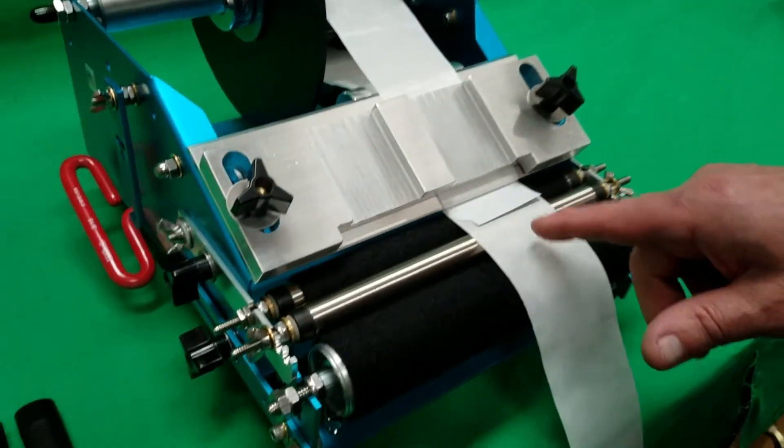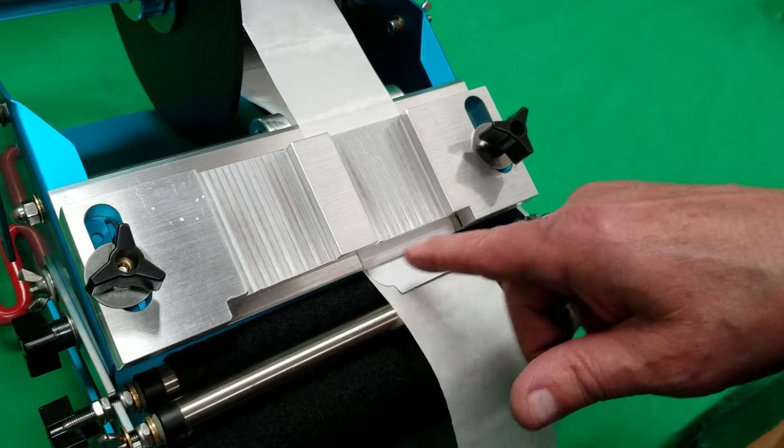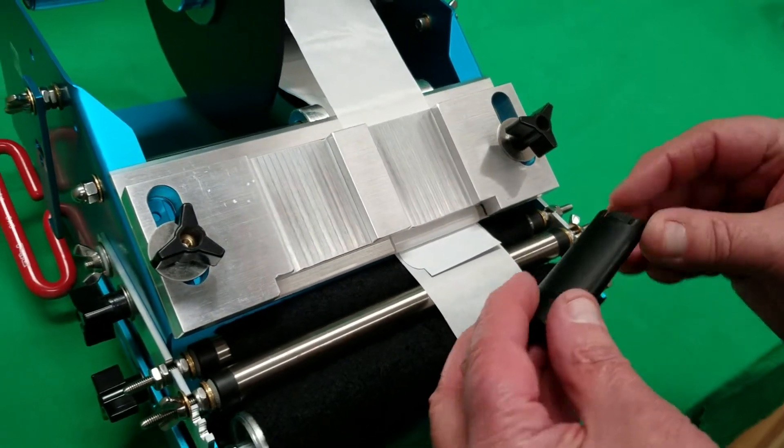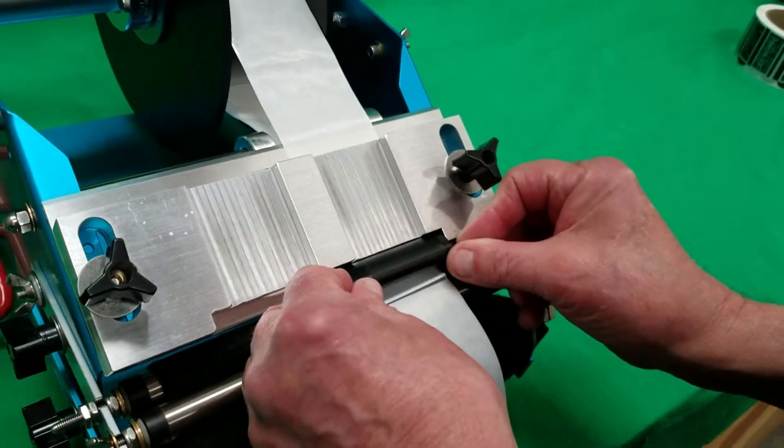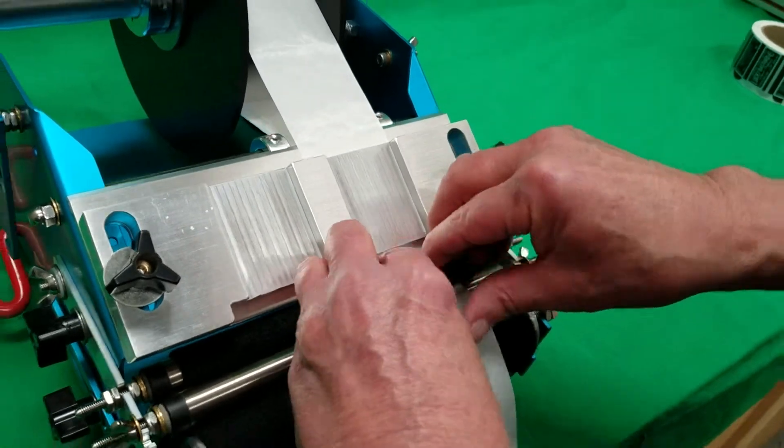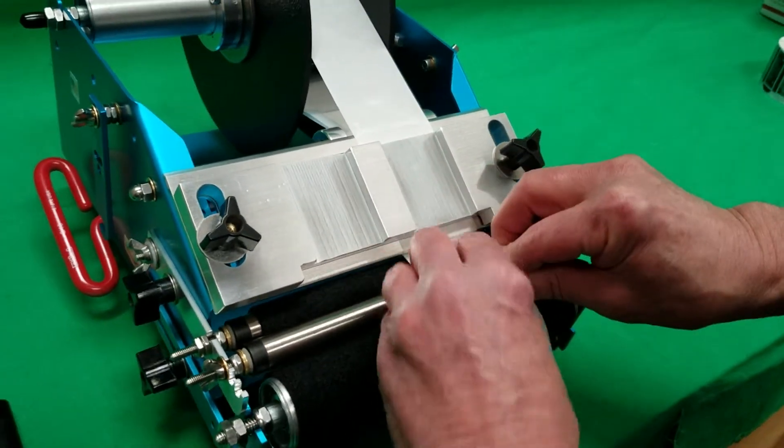To do the oval lip balm, the label is flagged out to a predetermined location and then the lip balm is put in the nesting area, teeters down, and the label is applied.